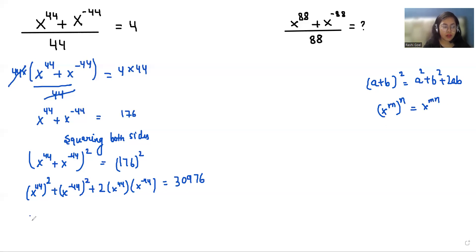So here we can write it as 44 times 2, that is 88, plus x power minus 88, plus here again we are using the product rule.